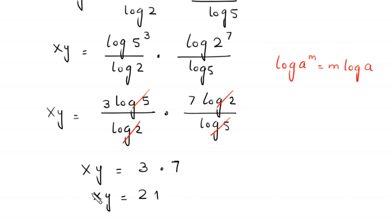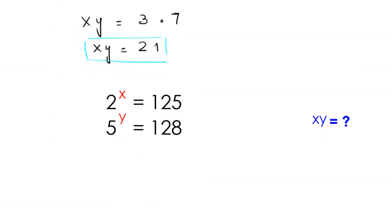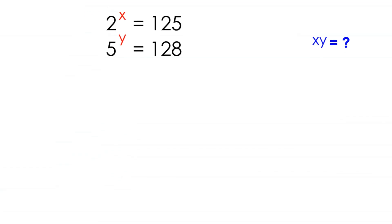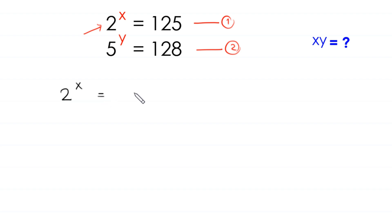So 21 is the required value of x times y and the final answer of this problem. Now let's solve this system of equations using another method, without using logarithms. We again call this equation number 1 and this equation number 2, and start from equation number 1: 2 to the power x is equal to 125. In this method we take power y on both sides.